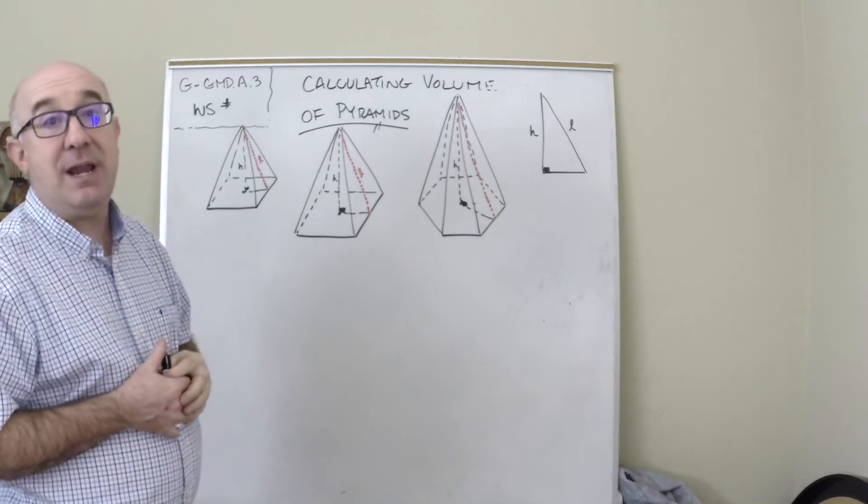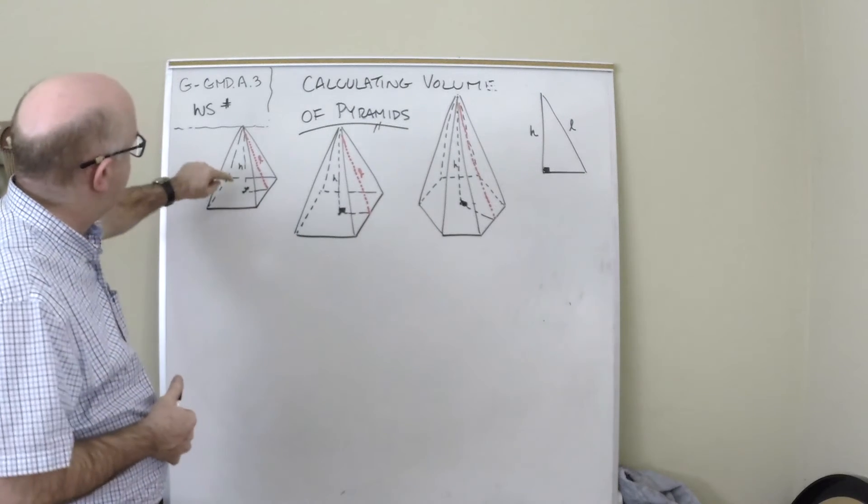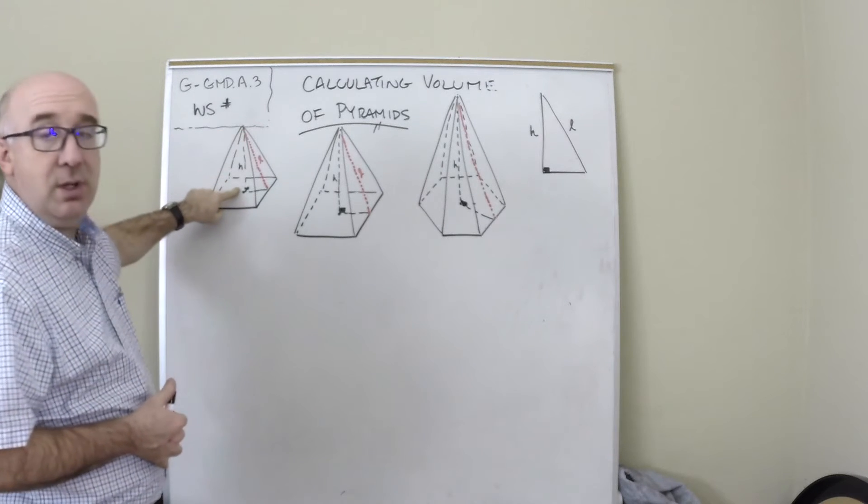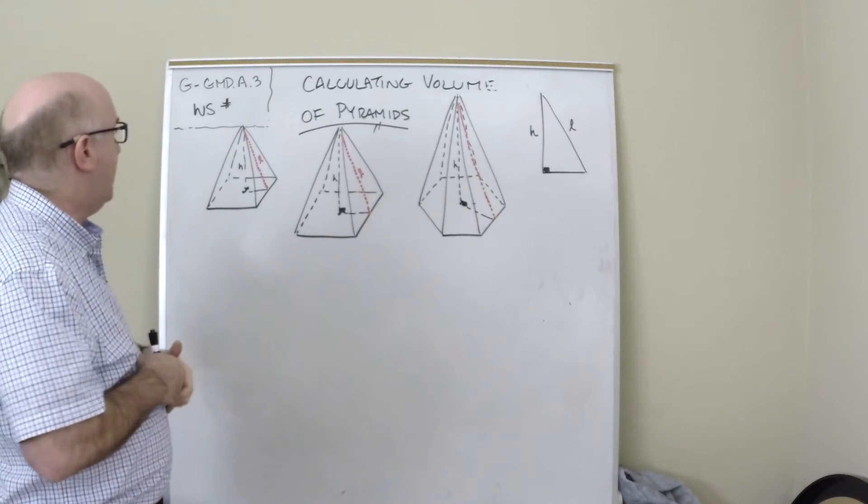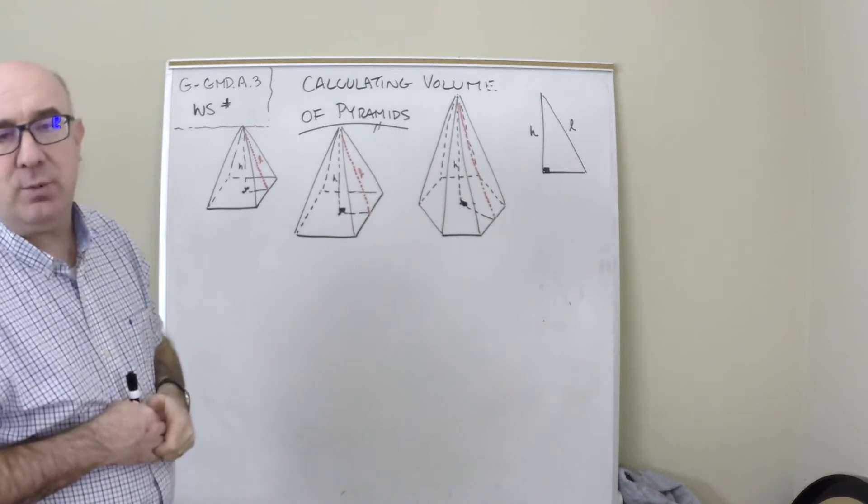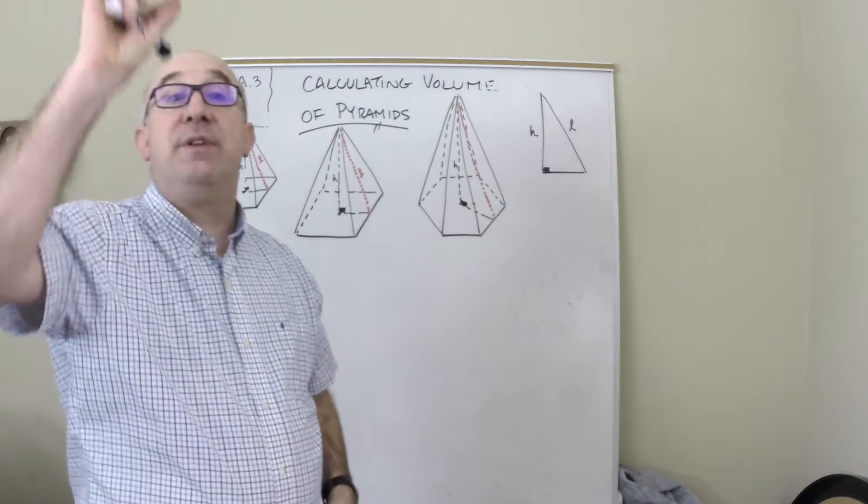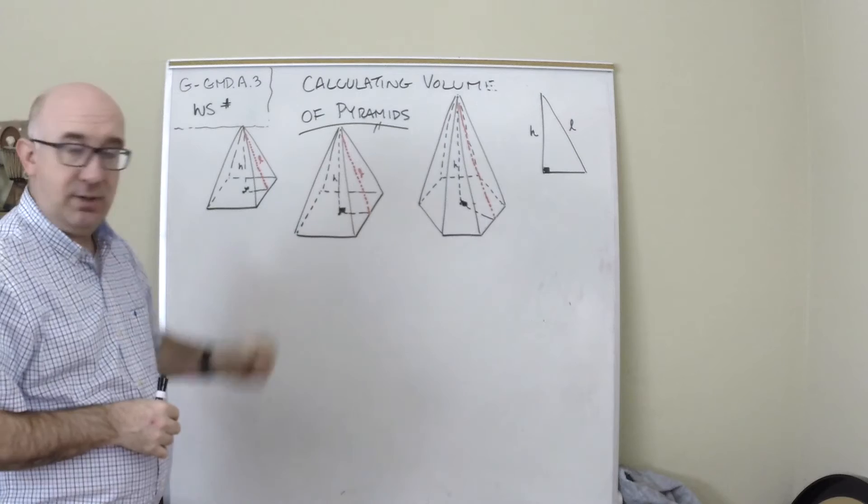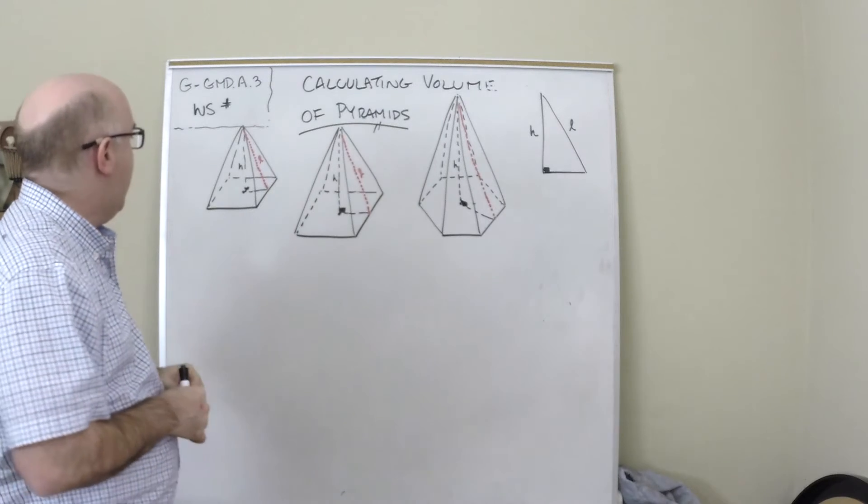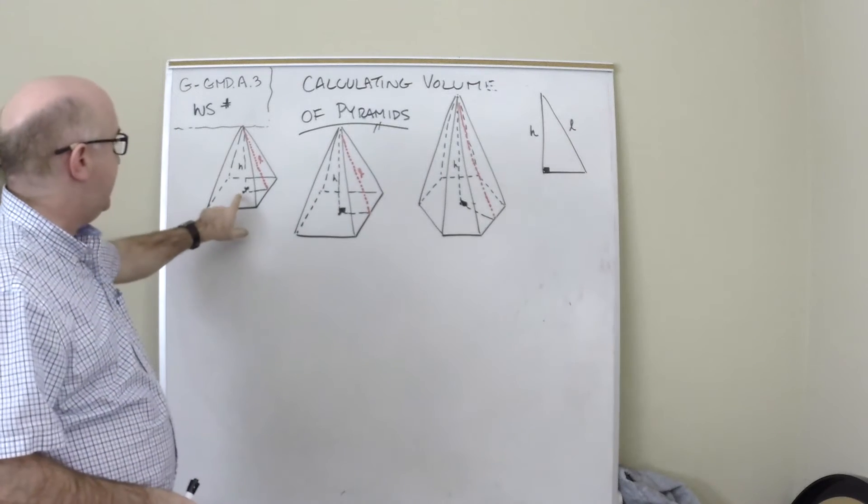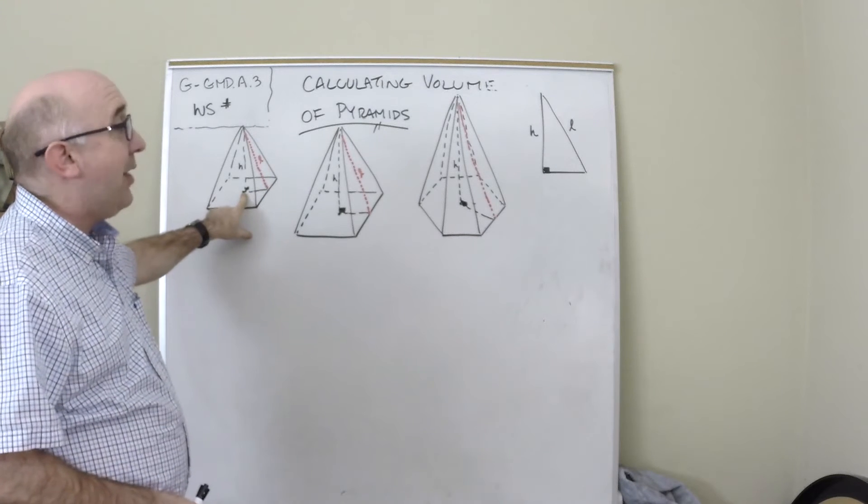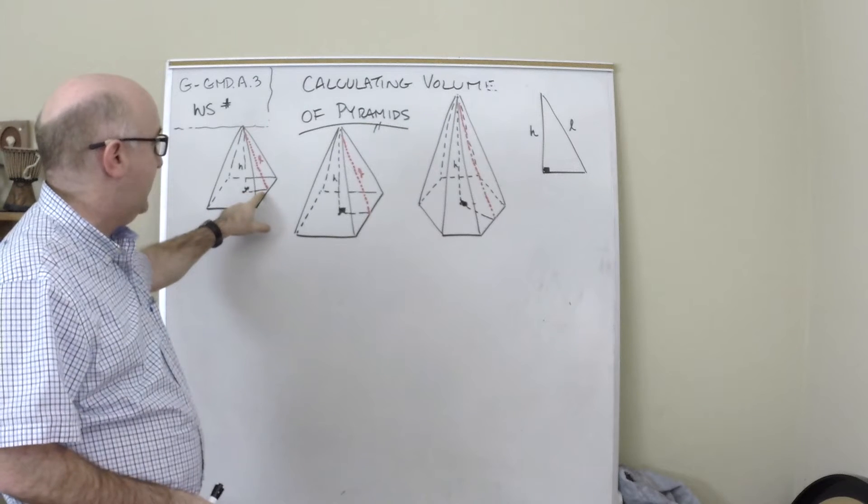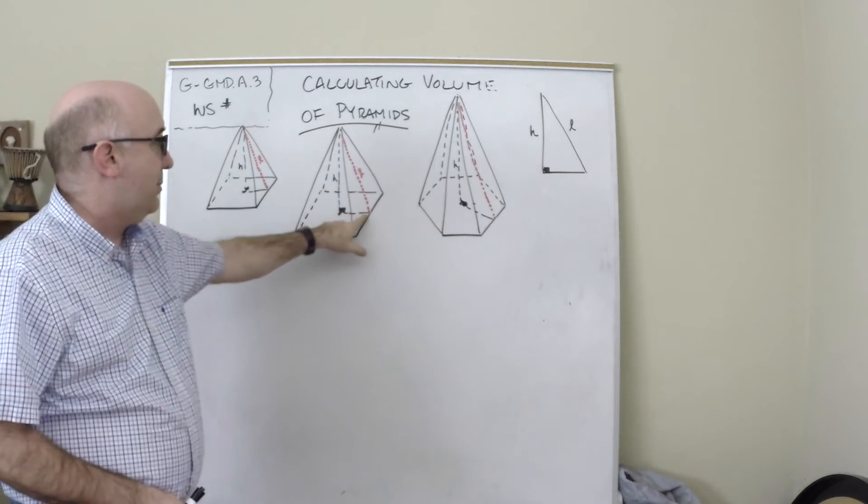There's always a height, which is the perpendicular distance from the apex to the base. In a right pyramid, it would be right over the center of the shape, so this would be the center of the square. Then you have a distance here which is an apothem - the distance from the center perpendicular to a side.